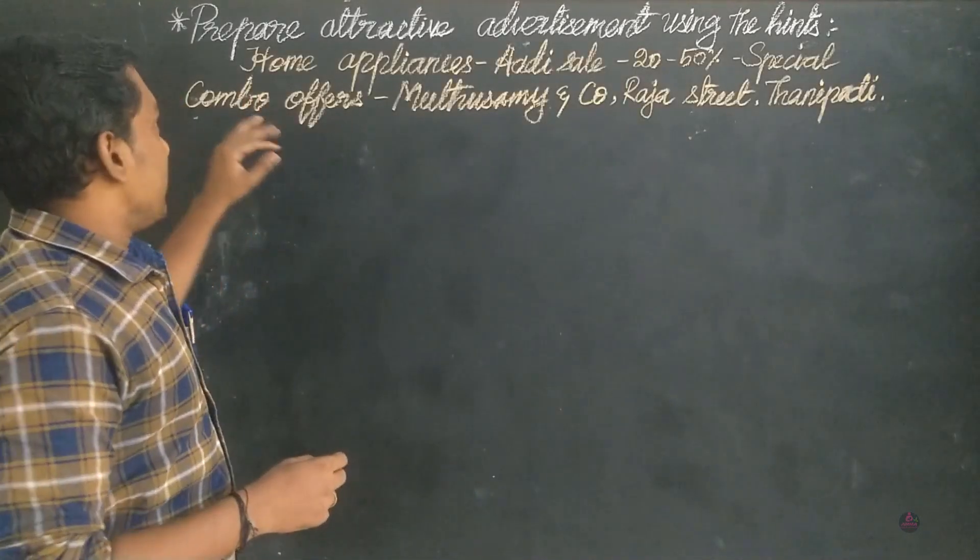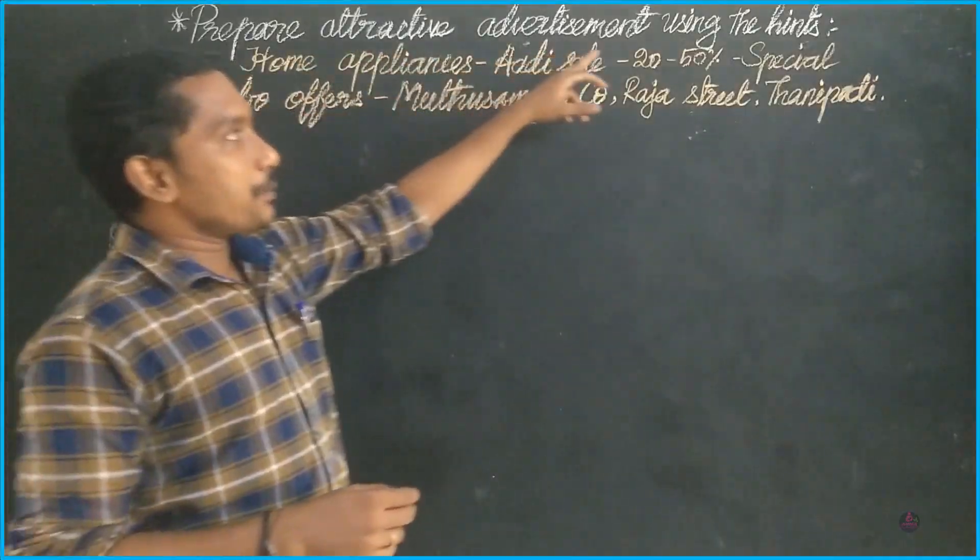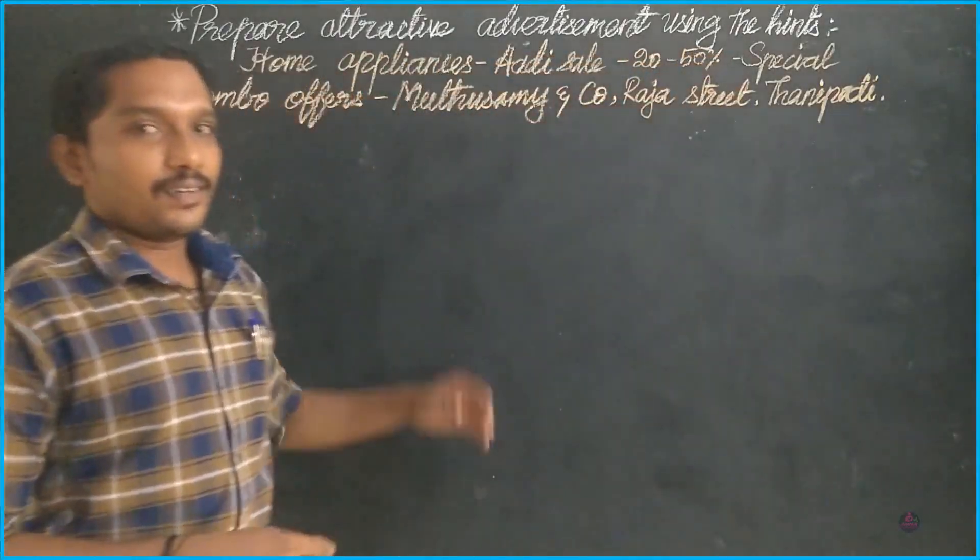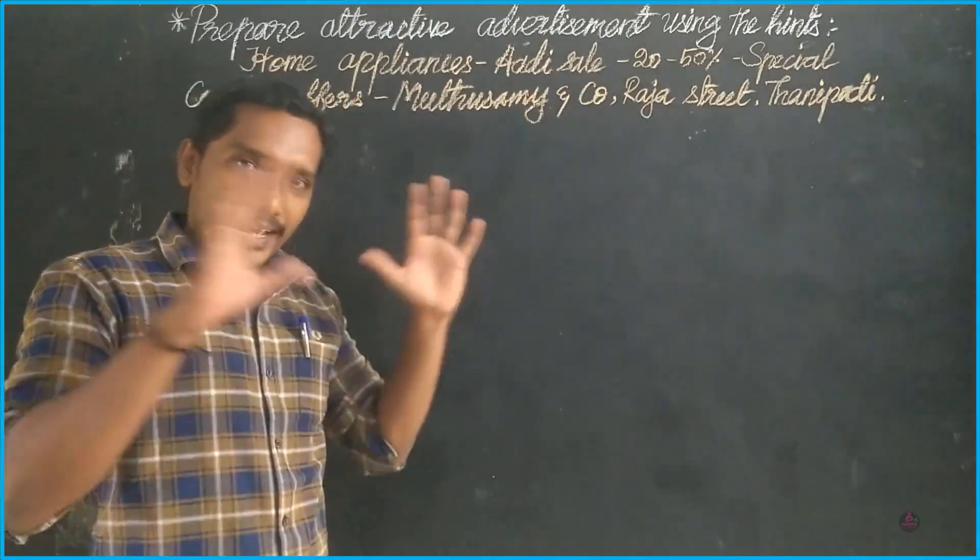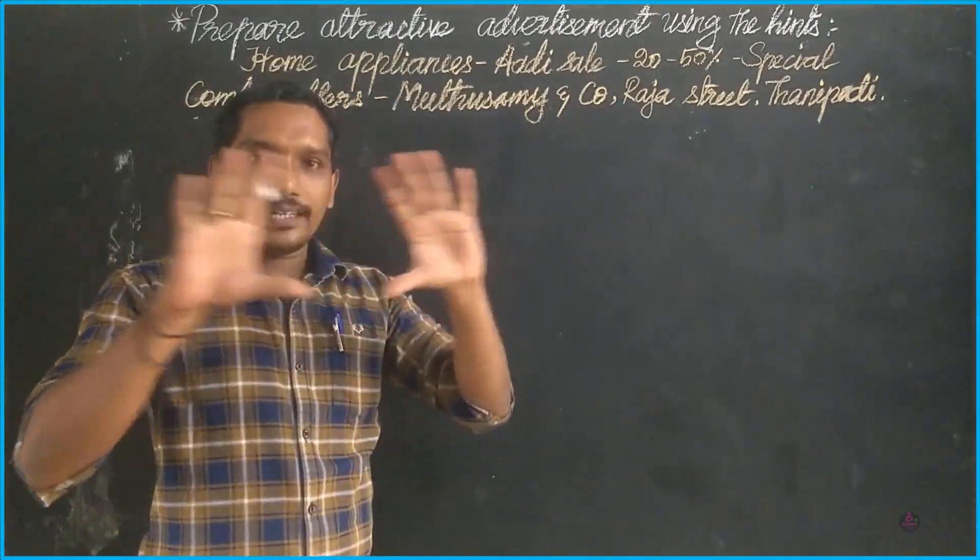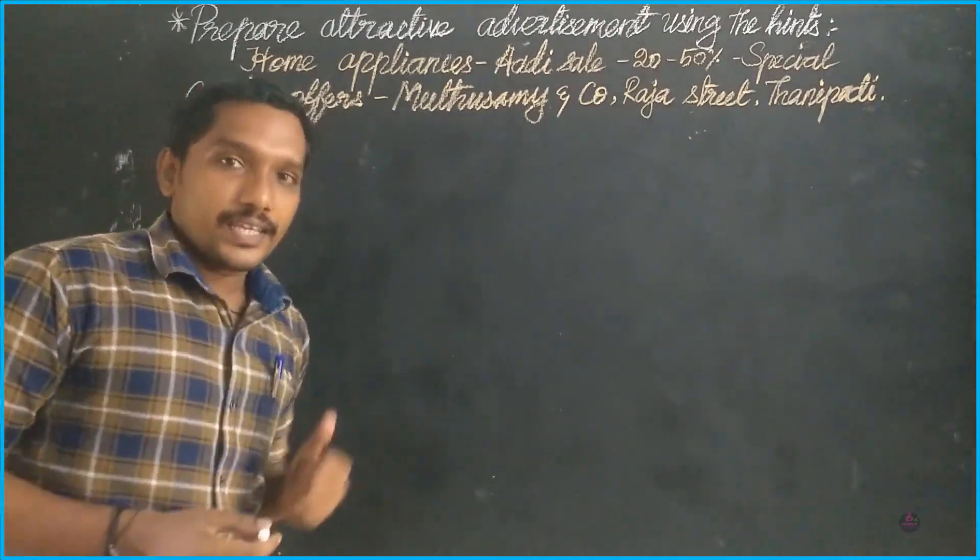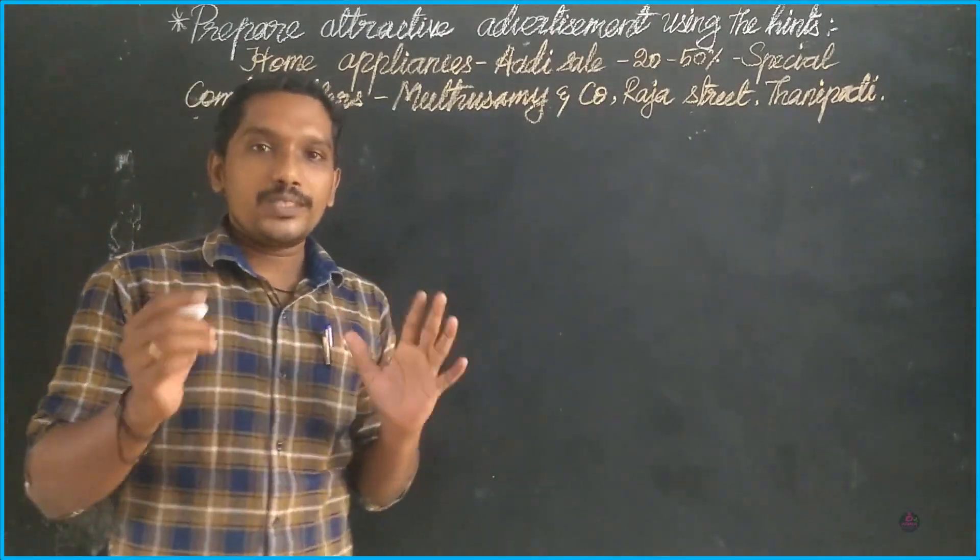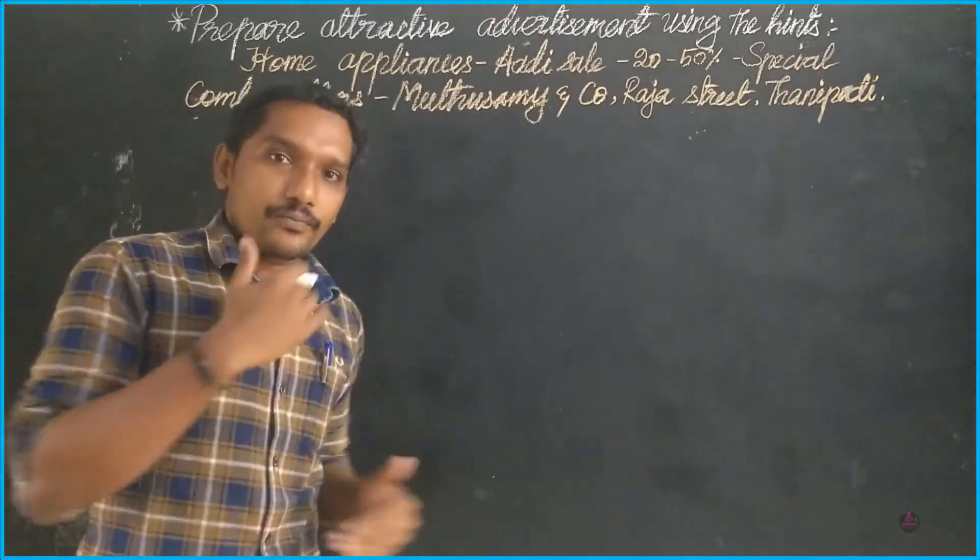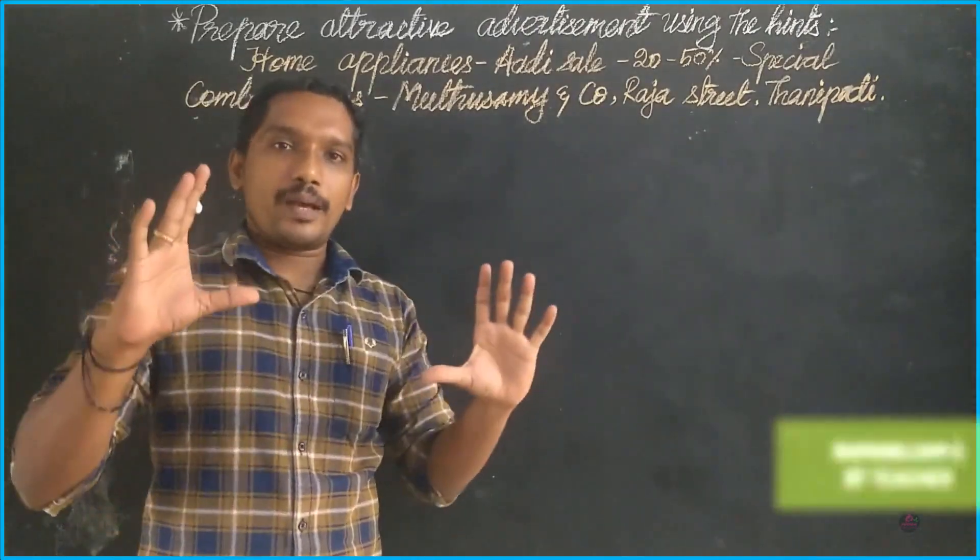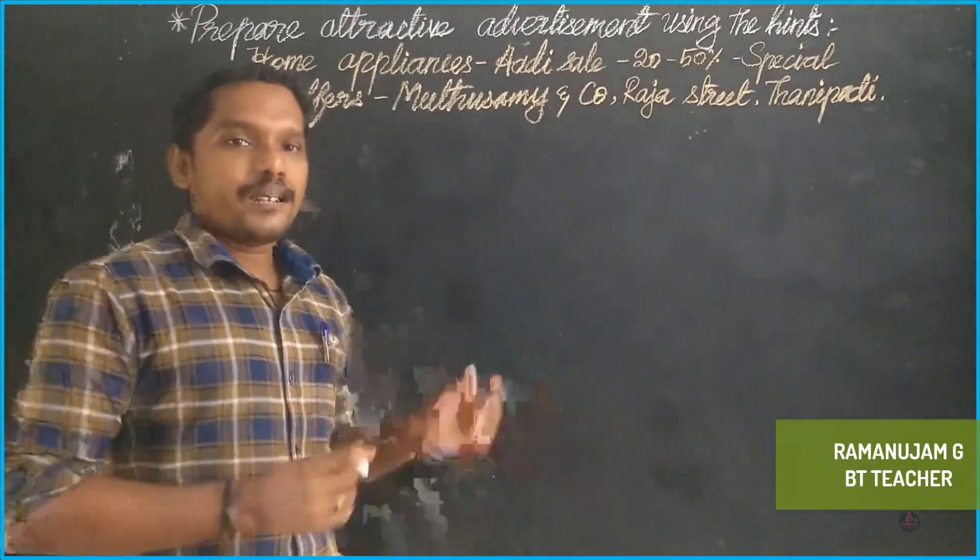See the first question: prepare attractive advertisement using the hints. They have given us hints, and by using these hints we have to make advertisement in a single whole paper. I'll give you one tip: don't draw the advertisement in a portrait shape. Instead, rotate your paper in a landscape mode and make the picture.